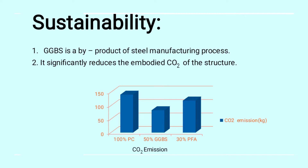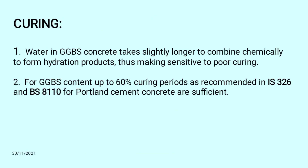Sustainability: GGBS is a by-product of the steel manufacturing process. It significantly reduces the embodied CO2 of the structure. Given below is a graph showing the CO2 emission of GGBS. Curing: Water in GGBS concrete takes slightly longer to combine chemically to form hydration products, thus making it sensitive to poor curing. For GGBS content up to 60%, curing periods recommended in IS 326 and BS 8110 for Portland cement concrete are sufficient.